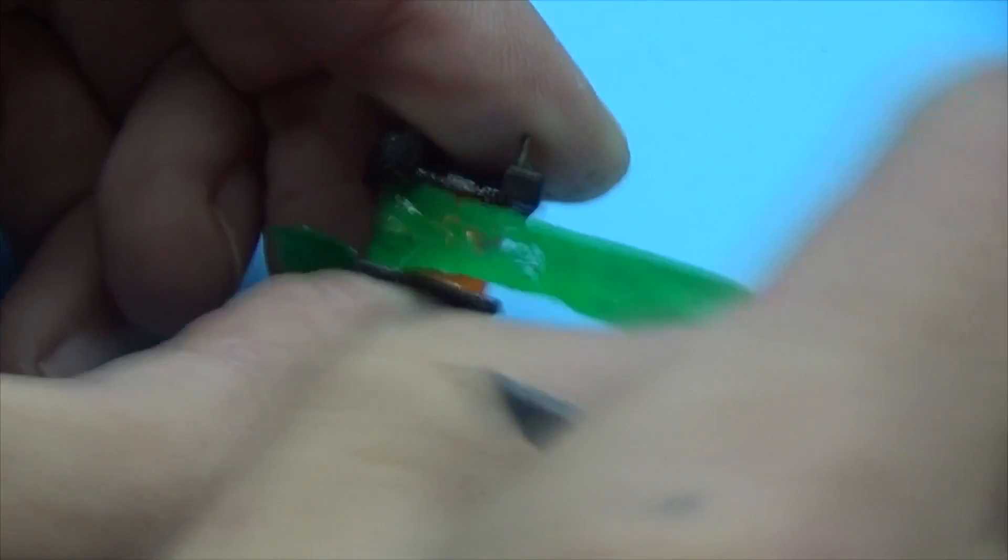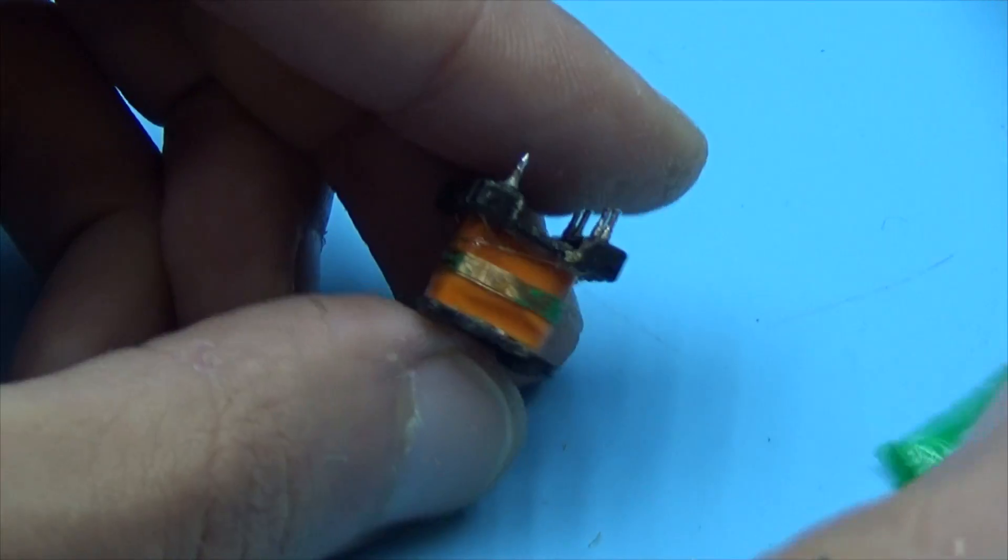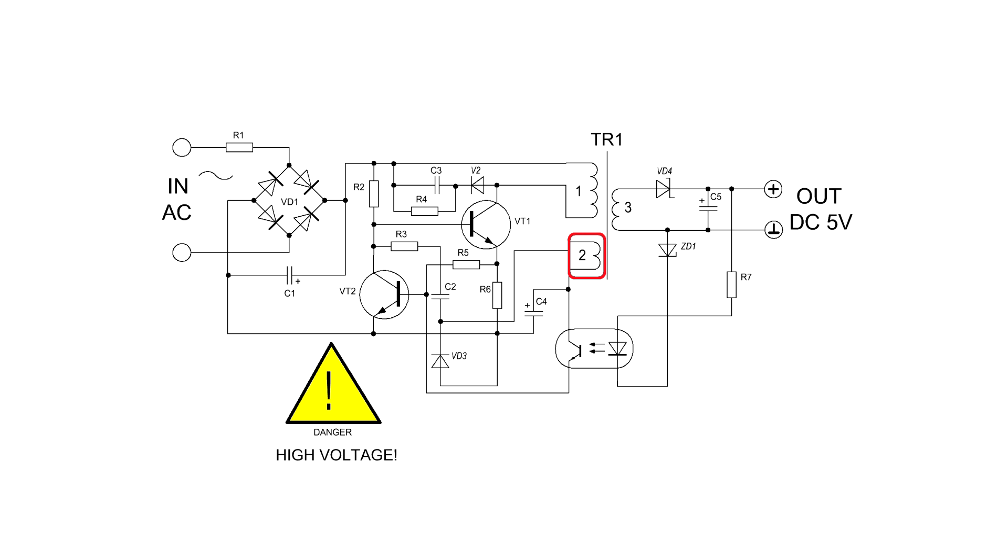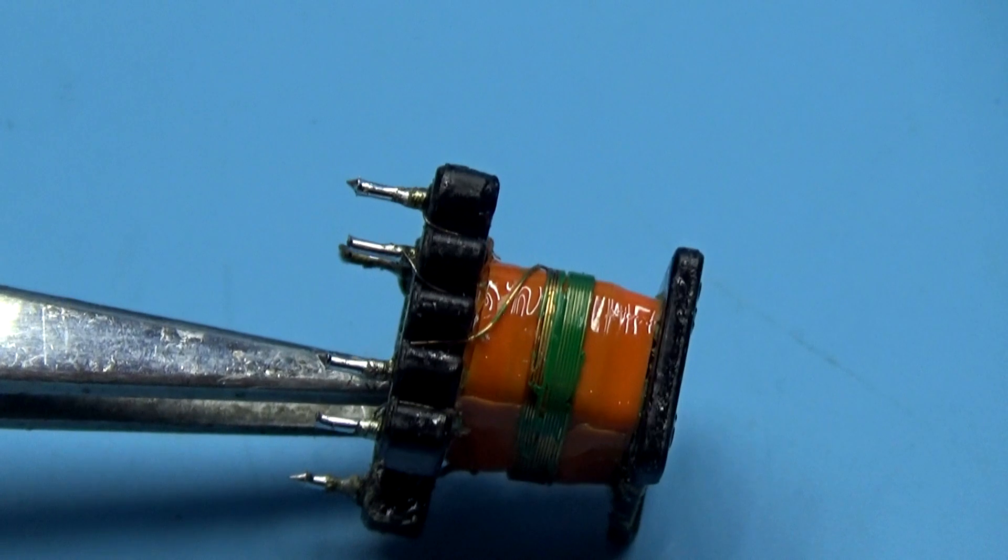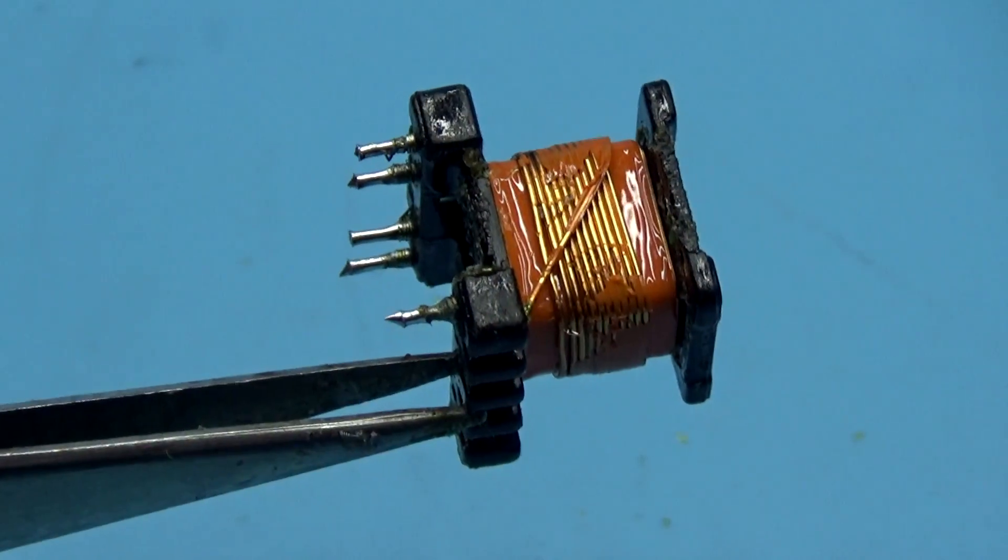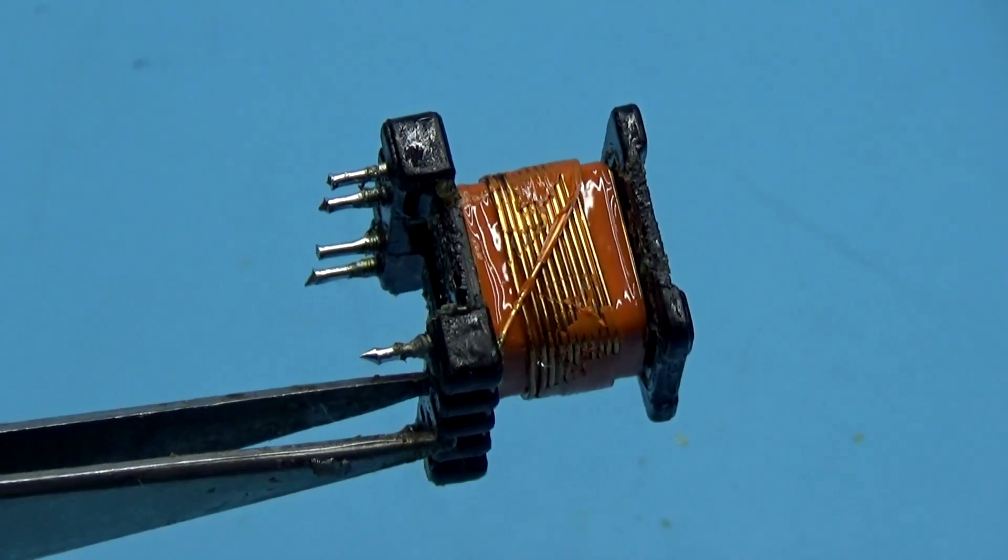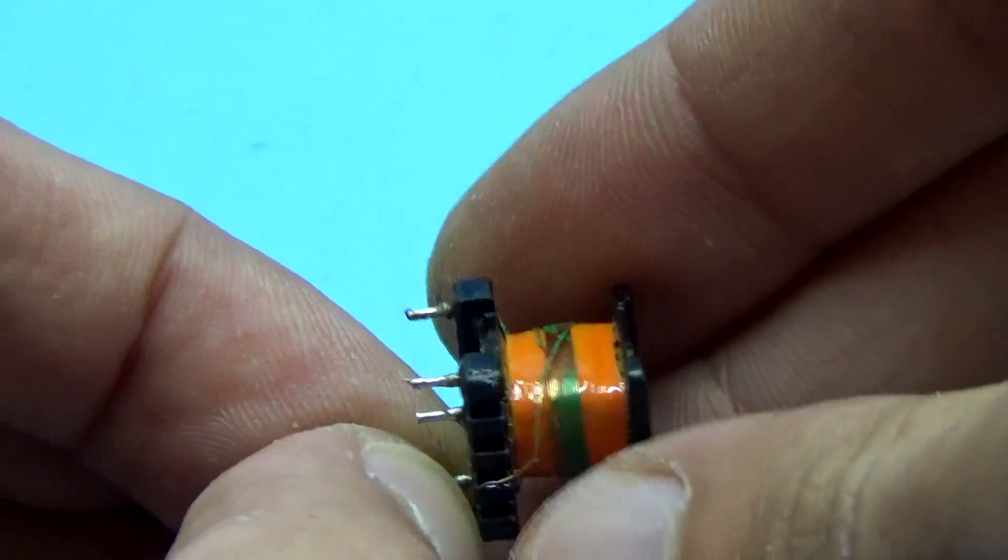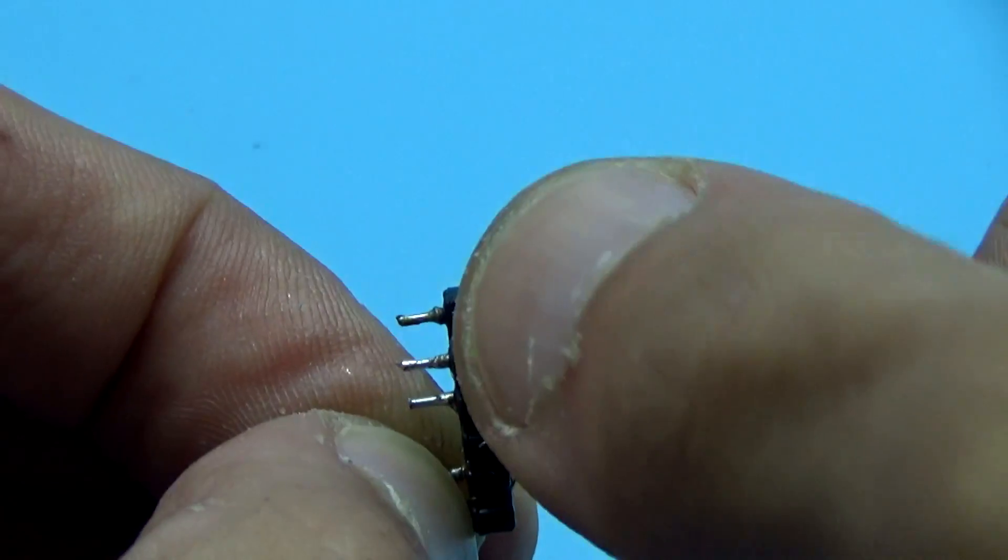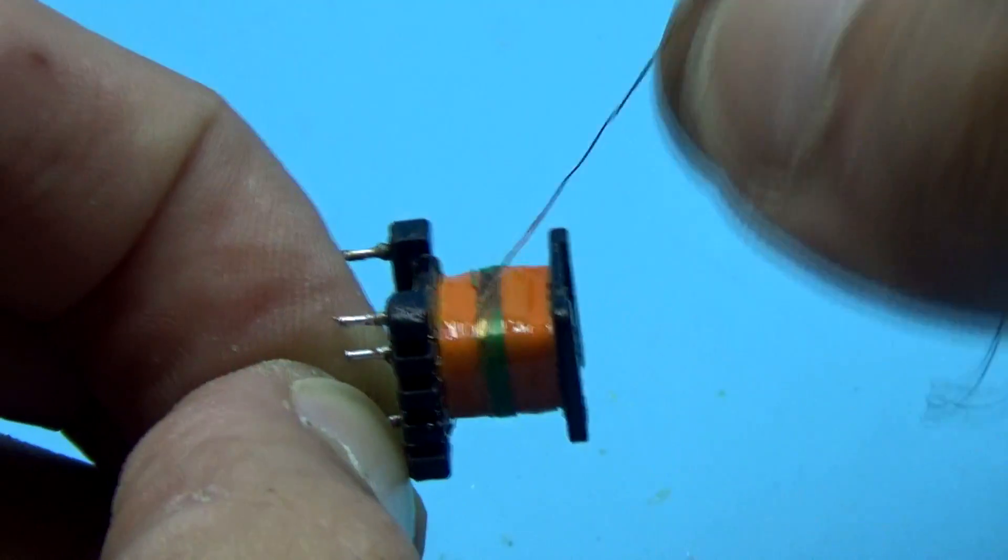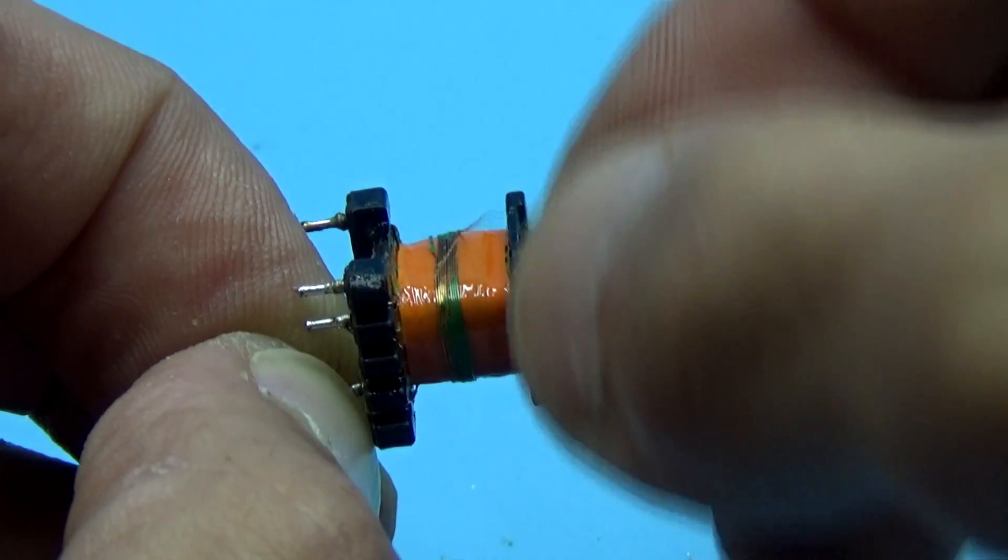After that, we remove the scotch layer and under it we find a thin winding. This is our base winding, wound with 0.15mm wire and consists of 13 turns. By the way, the secondary winding of the transformer also contains 13 turns. The winding is carefully removed. After our rework, it needs to be reeled back, but this wire length is no longer enough, so this piece is no longer useful to us.